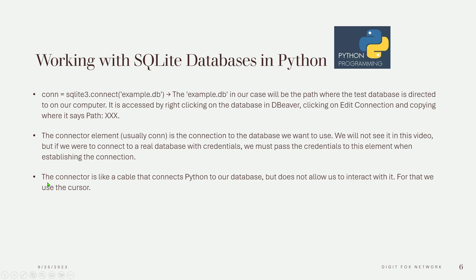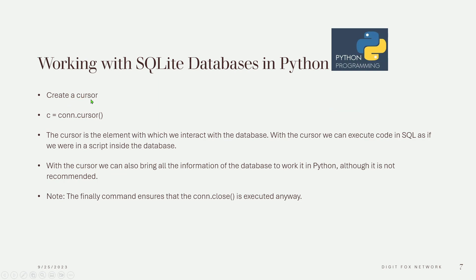The connector is like a cable that connects Python to our database, but does not allow us to interact with it. For that we use the cursor. To create a cursor: c = con.cursor(). The cursor is the element with which we interact with the database. With the cursor we can execute SQL code as if we were in a script inside the database. With the cursor we can also bring all the information of the database to work in Python, although it is not recommended.